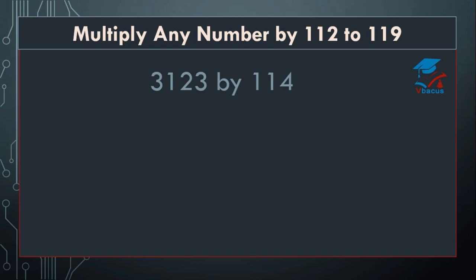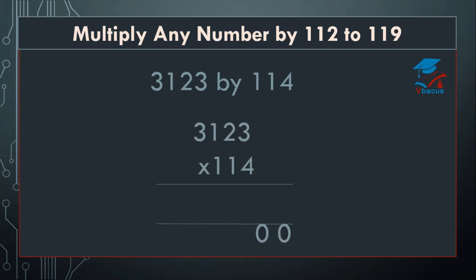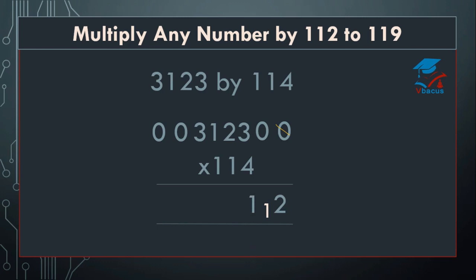Let us try another sum: 3123 by 114. Insert 2 zeros on the right hand side and 2 zeros on the left hand side. Start multiplying by 4. So, 4 threes are 12 plus 0 plus 0 equals 12. Write 2, 1 will be carried over. Cut the 0. 4 twos are 8 plus 3 equals 11, plus 0 equals 11. Write 1, 1 will be carried over. Cut 0. 4 ones are 4 plus 2 equals 6, plus 3 equals 9. Write 9.